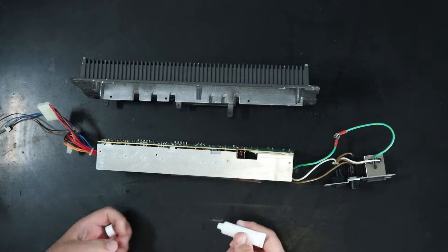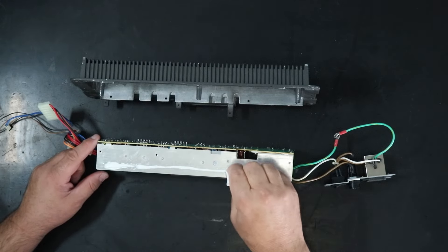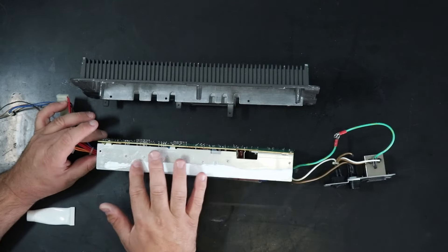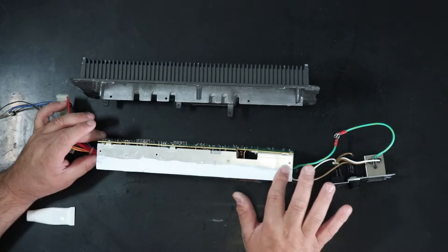Now all that needs to be done is to reassemble everything in reverse order. The heat sink gets a good coat of thermal paste and yes it's a lot. There's a large surface area to cover and the gap between the parts is much more than you would have with something like a CPU heat sink.